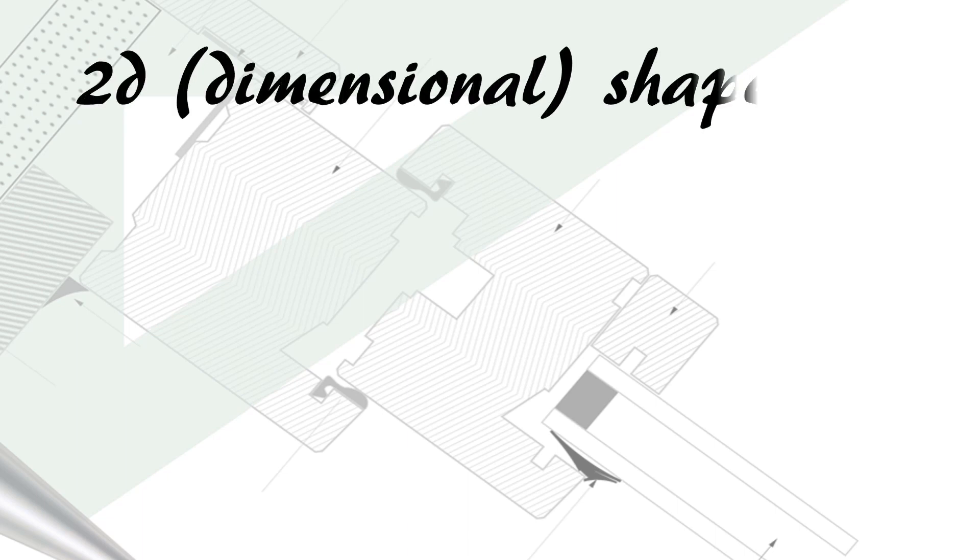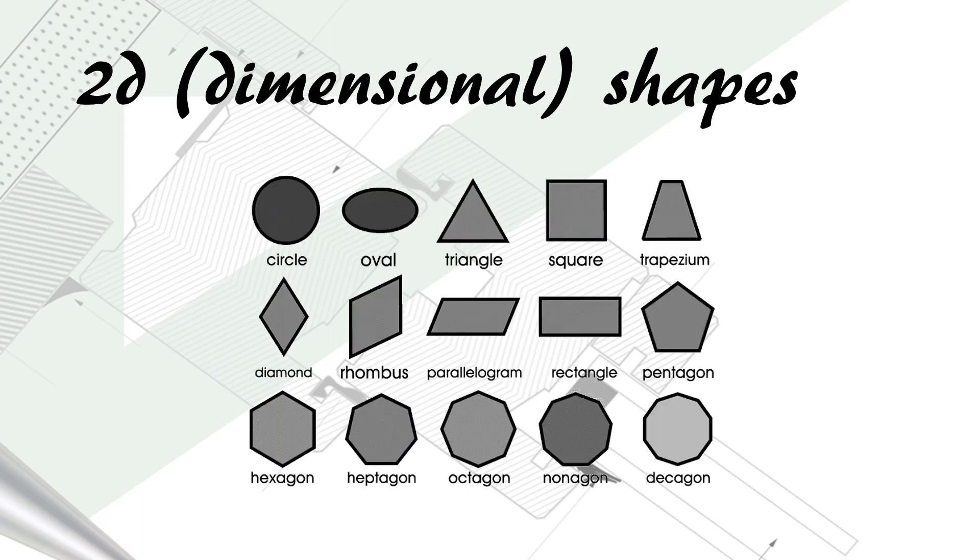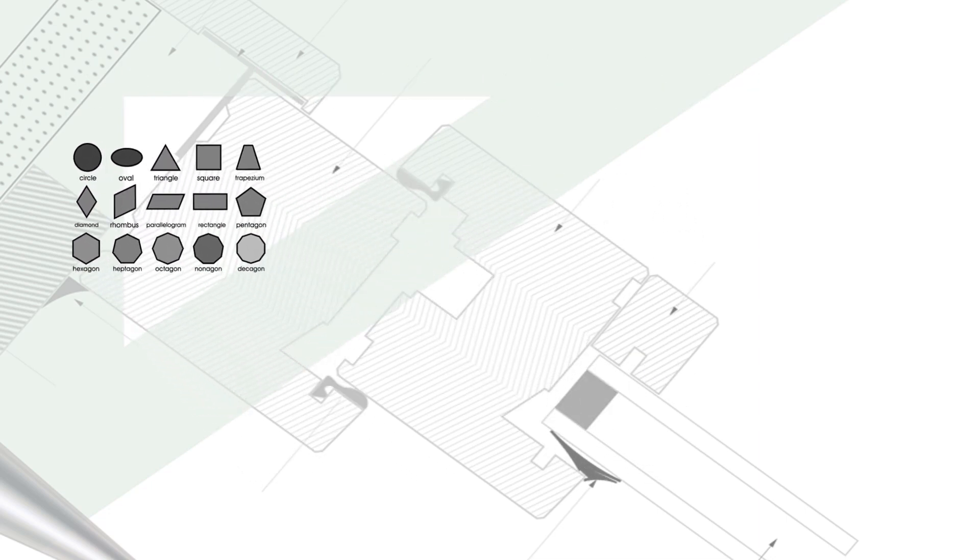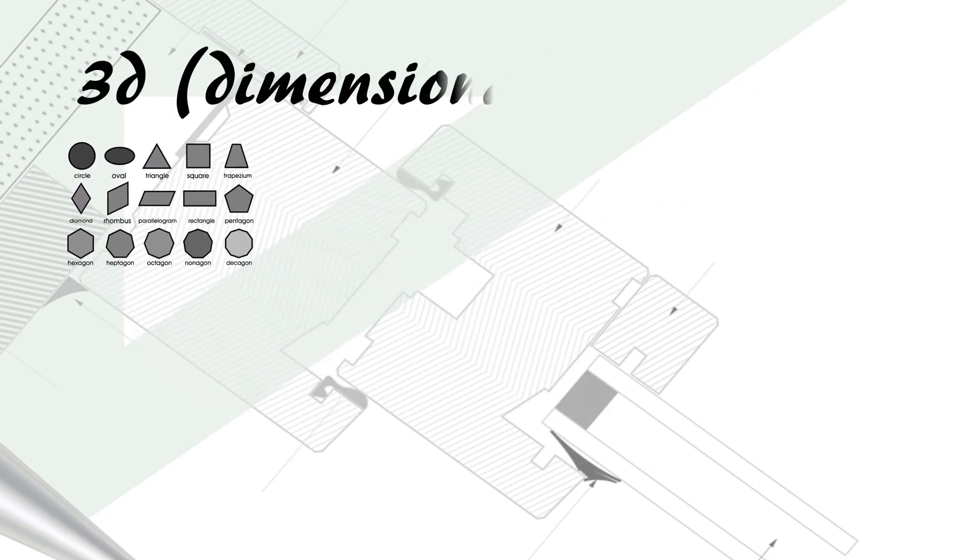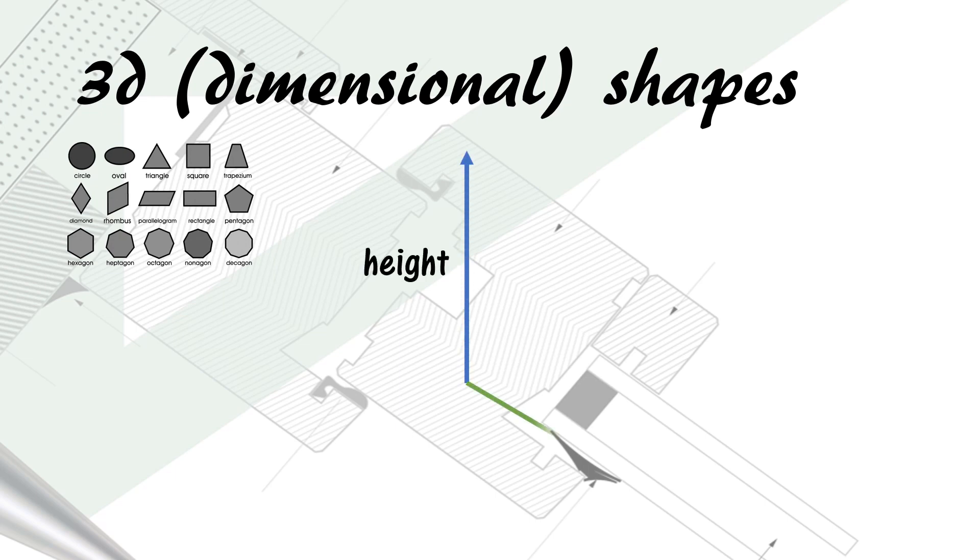So now we know the basic two-dimensional shapes. Let's take a look at some three-dimensional shapes. Three-dimensional means it has three axes: a height, a length, and a width.